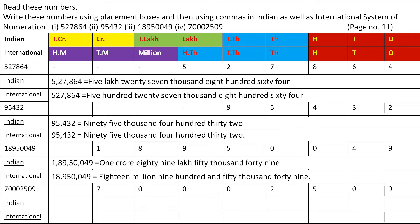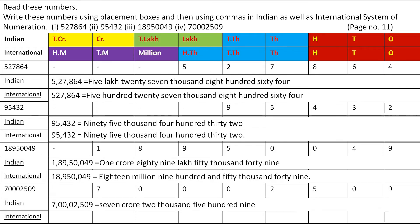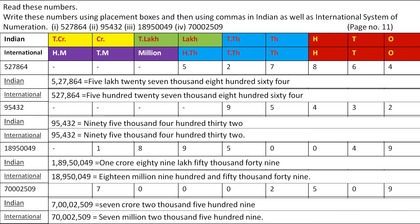Let's see the next example. The next number is 7,00,02,50,059. Here, the 7 is coming in the group of crore. The next two zeros are coming in the group of lakh. Then 0 and 2 are coming in the group of thousands, and the remaining 509 is coming in the group of ones. So the number name in the Indian Number System is 7,00,02,50,059. According to the International Number System, 70 is coming in the group of millions, then 0, 0 and 2 are coming in the group of thousands, and 509 is coming in the group of ones. So the number name according to the International Number System is 70,002,509.